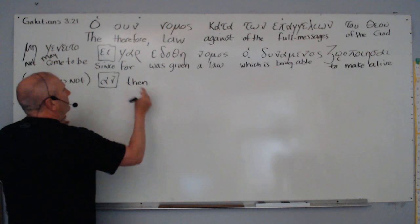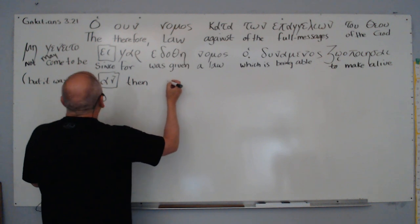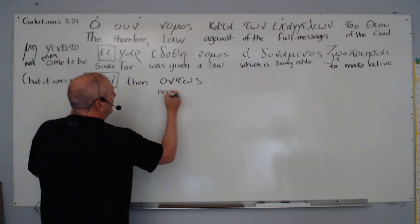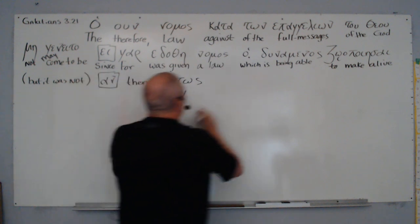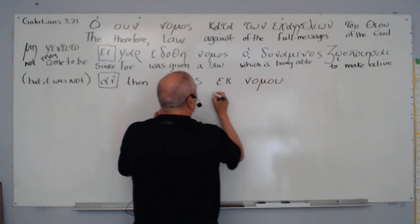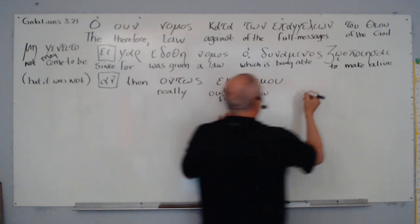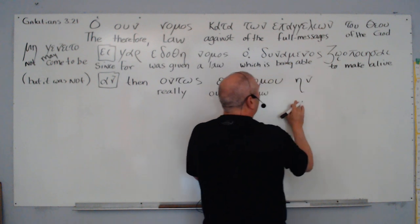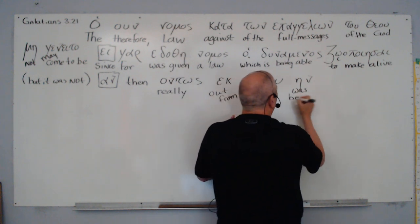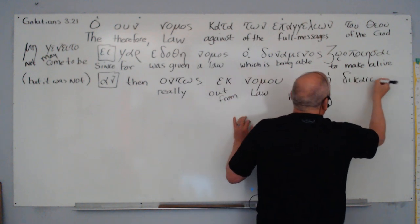Then, so we'll write then here. So we have if then, that's the protasis, this apidosis for those of you in the Quante Greek class. Then, on, ontos, really, it's an adverb, really. Then, out, ek, nomu, out from law. Law, an imperfect form of eimi, was being, speaking of past continuous action, was being. Here he says, the dikaio sinai.